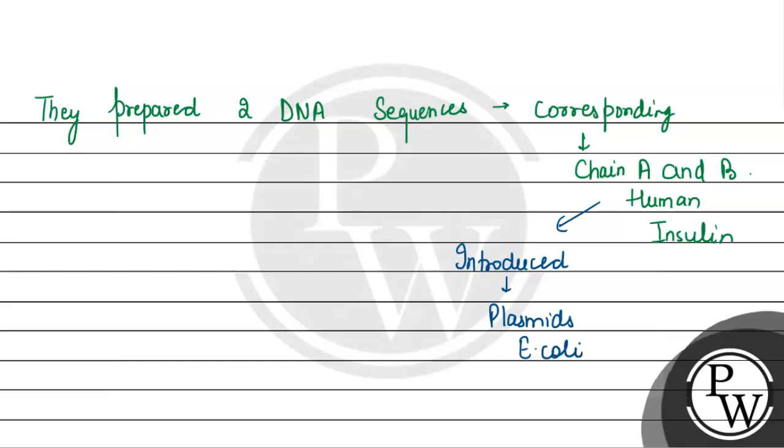This was to produce insulin chains A and B separately. The chains A and B were produced separately.